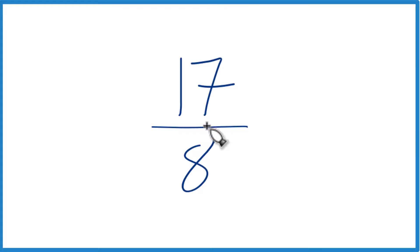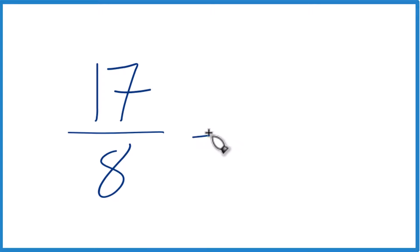So 8 goes into 17. 2 times 8 is 16, so let's say 2. 2 times 8 is 16. We have a remainder of 1. We put that remainder as our numerator. We just bring the 8 across.